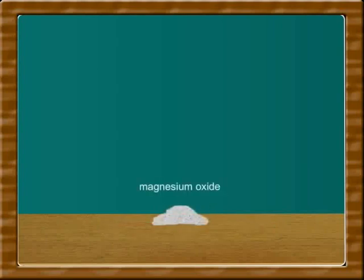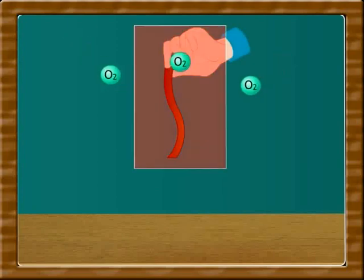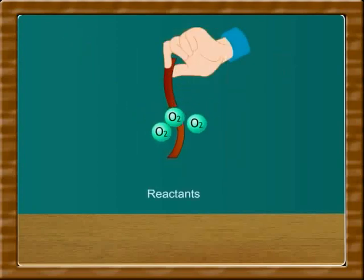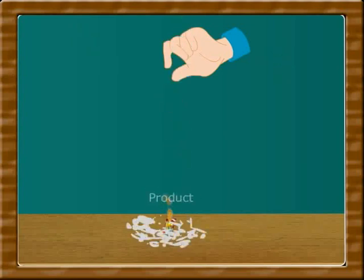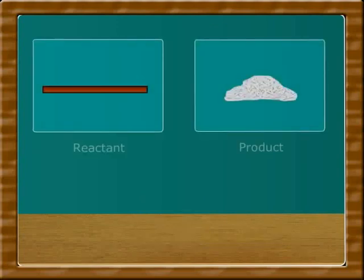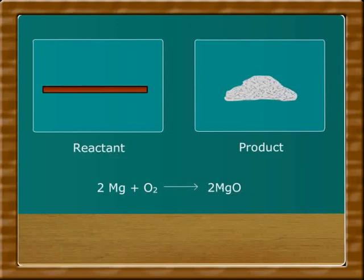The magnesium is transformed into magnesium oxide. The starting material which starts the chemical reaction is called reactants — here, magnesium and oxygen are the reactants. The material obtained after the completion of the reaction is called the product. In this case, magnesium oxide is the product. The product formed is entirely a different compound and has nothing to do with the reactant. The chemical reaction is also shown in the form of symbols and formula, known as a chemical equation.